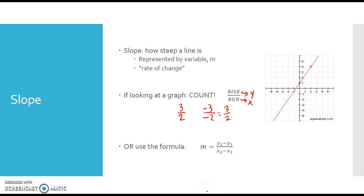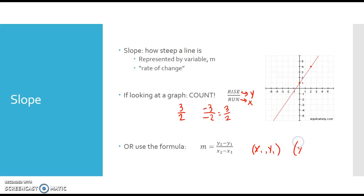If you don't have the graph, you're going to use a formula: y2 minus y1 over x2 minus x1. These subscripts are talking about the points you have. In order to find slope, you've got to have two points, whether on a graph or given in writing. Your first point will be (x1, y1) and your second point will be (x2, y2). Whatever your points are, you plug in here. Keep in mind, x2 and y2 are a point, and x1 and y1 are a point — they line up in our formula.